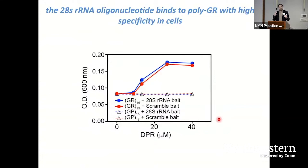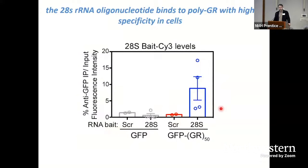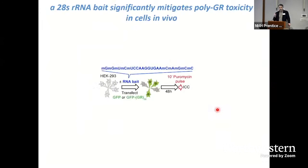The first thing we did was confirm that this bait could bind to polyGR in vitro in a test tube — it binds very strongly. We next put this bait in cells and showed that it can enter cells, is not toxic at all, and is highly specific in its ability to bind polyGR. It does not bind GFP, and polyGR exclusively binds the 28S bait and not the scrambled control bait.